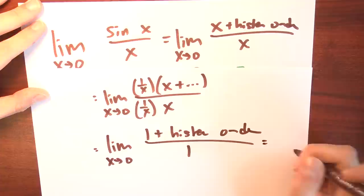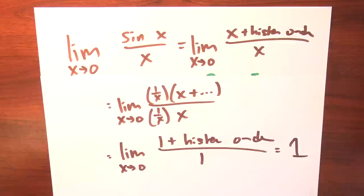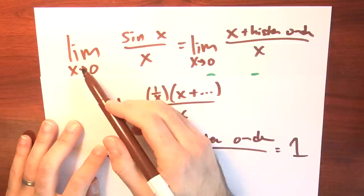And that is not even close to a proof. What's wrong with this argument? Basically this is a circular argument. I'm trying to calculate the limit of sine x over x by thinking about a Taylor series for sine.